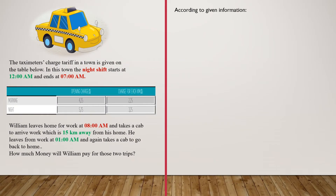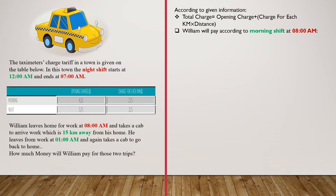we can say that the total charge for a trip can be found by adding the opening charge and the product of the charge per kilometer times total distance. At 8 a.m., William will pay according to the morning shift, because we know that night shift ends at 7 a.m.